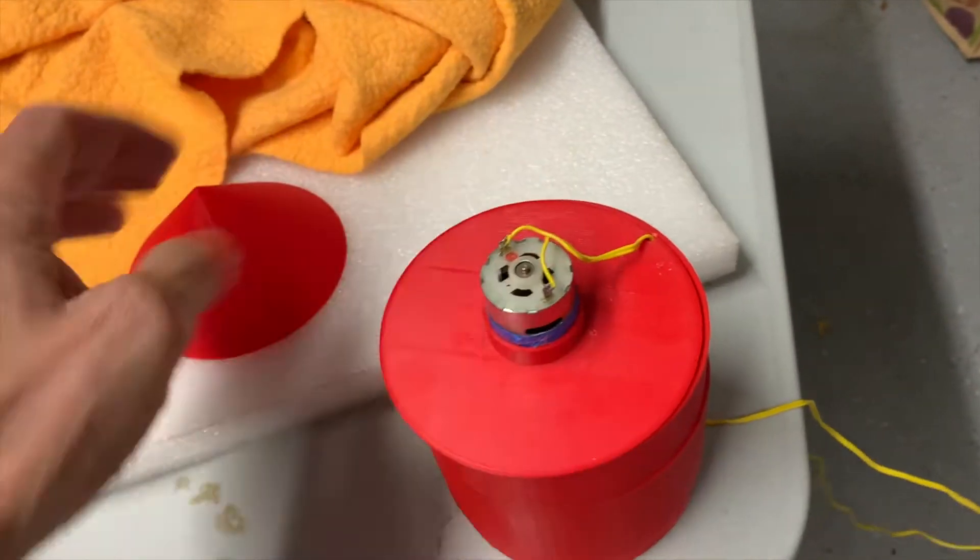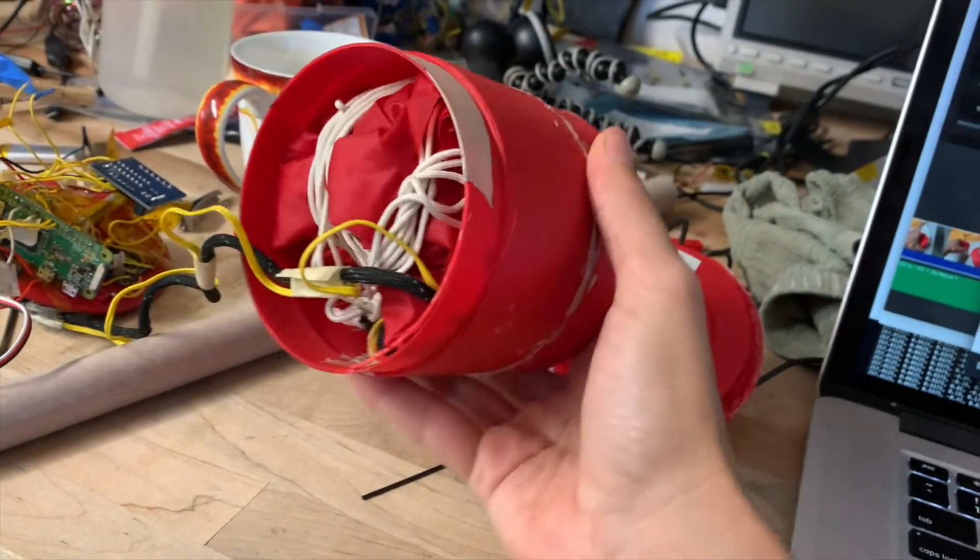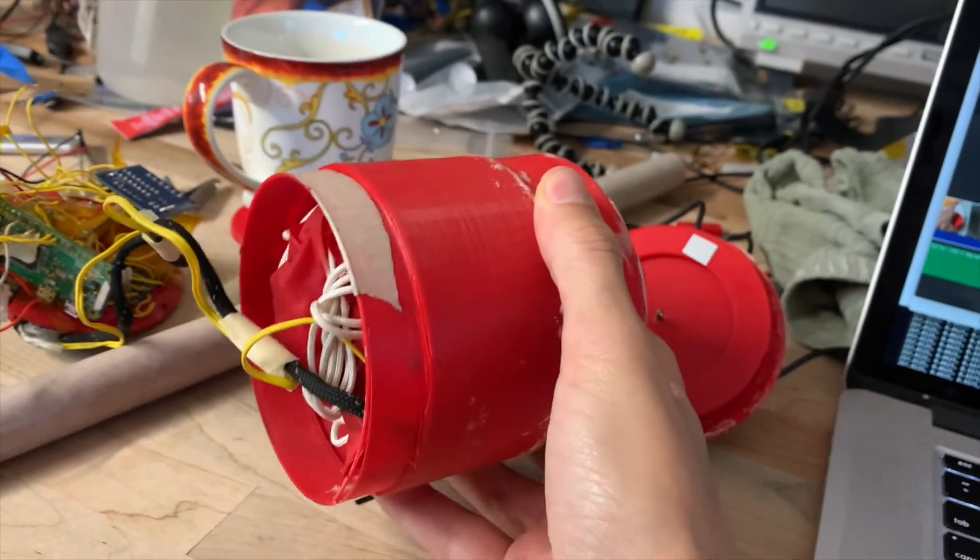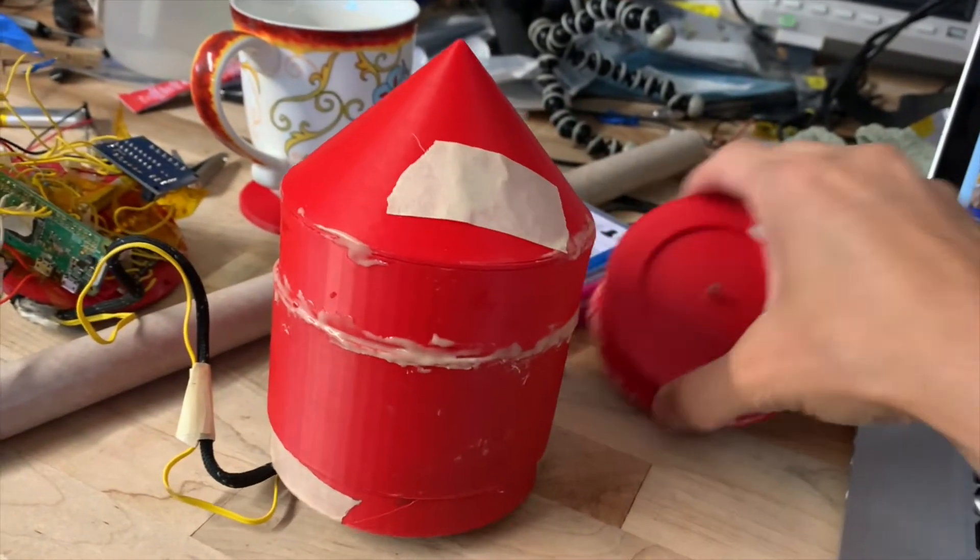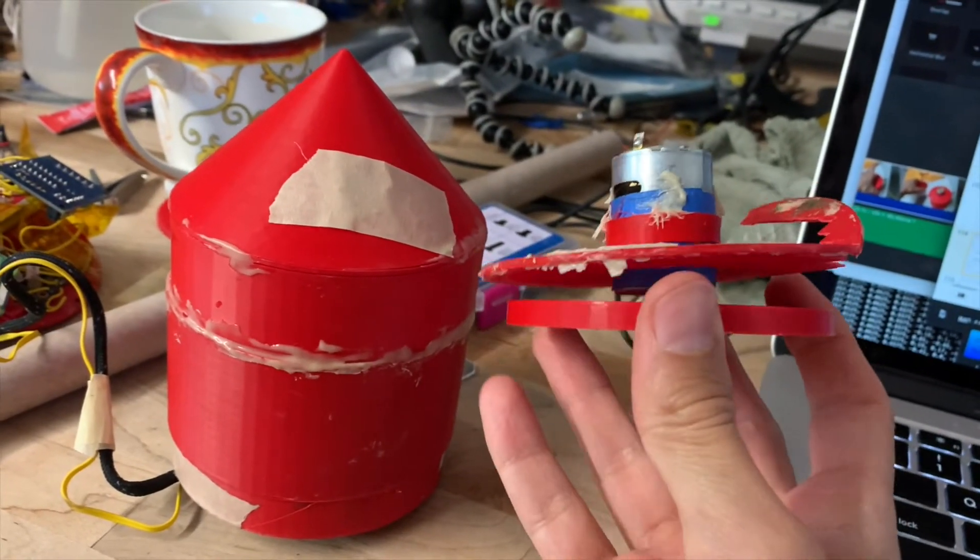That's the parachute holder and the whole thing just connects to the bottom motor mount. I just 3D printed this, pretty simple. You can see the parachute is in there, the control wiring, the motors up here inside. Basically, this is one that crashed.